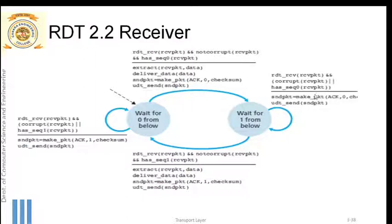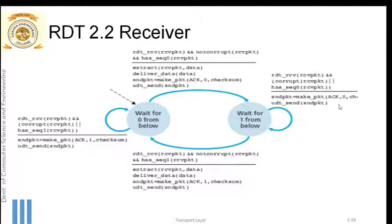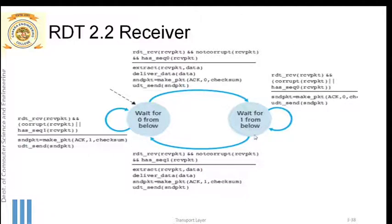To notify the sender about corruption without using NAK, the receiver prepares a positive acknowledgement but adds the wrong sequence number. For example, if the received packet has sequence number one but is corrupted, the receiver sends ACK 0 instead of ACK 1. ACK 0 effectively acts as a negative acknowledgement, indicating the packet was not properly received.